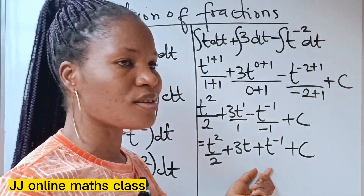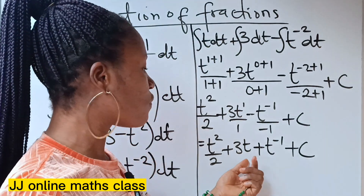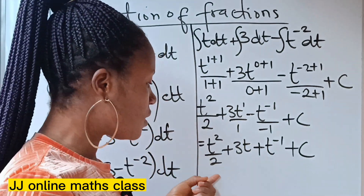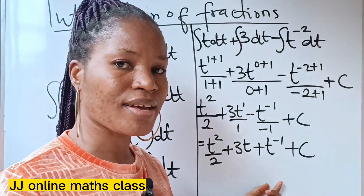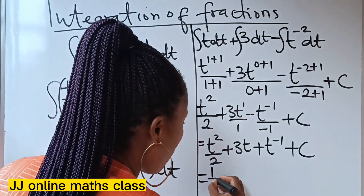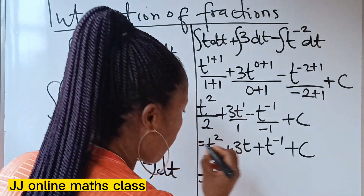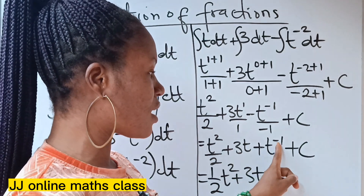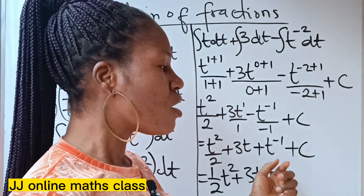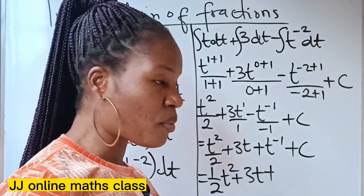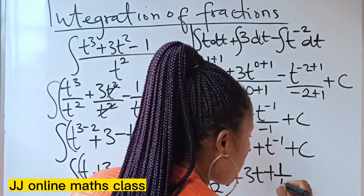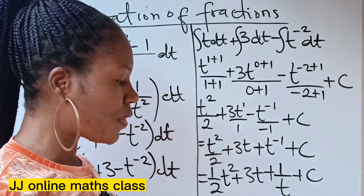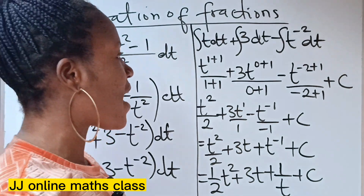Now this particular solution is 100% correct. But if this is an objective question, there is a possibility you won't see it exactly this way. Another way we can express this solution is: 1 over 2 times t squared, plus 3t, plus — remember this has a negative sign — t to the power of minus 1. If we want to remove the negative sign, we bring t down, so it becomes 1 over t, plus C. That is the final solution.